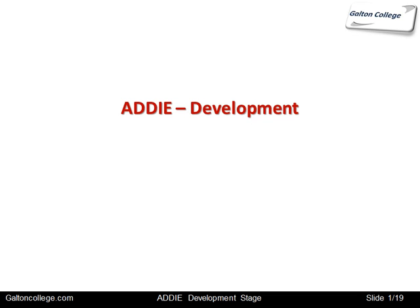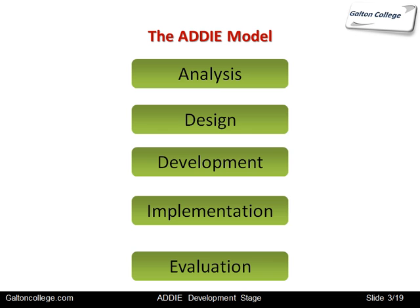In this session we are going to talk about the ADDIE model, which is used in the development of training programs, and in particular we are going to talk about the development stage of the ADDIE program. The ADDIE schema is divided into five parts and we are dealing here with the third part. ADDIE stands for Analysis, Design, Development, Implementation, and Evaluation, and training programs should follow these five steps.